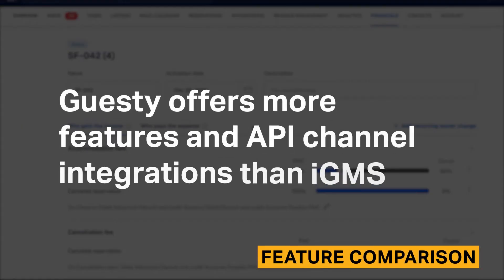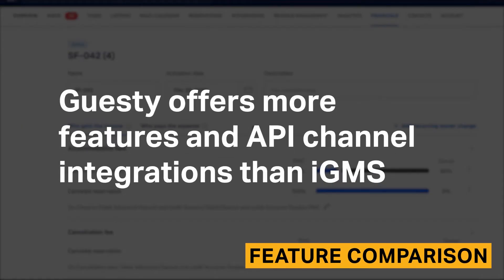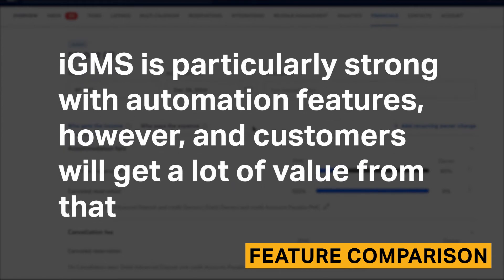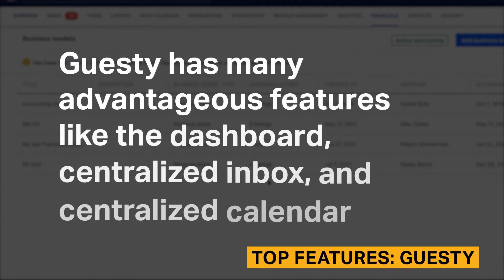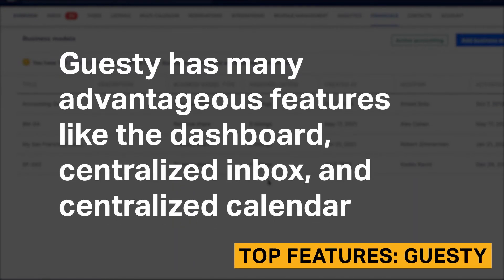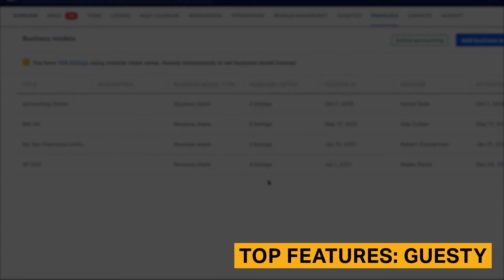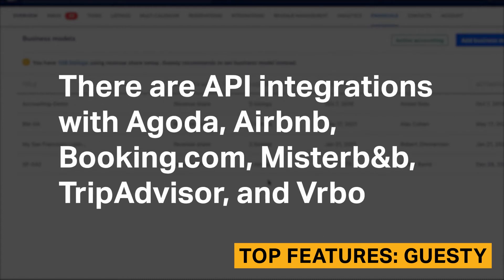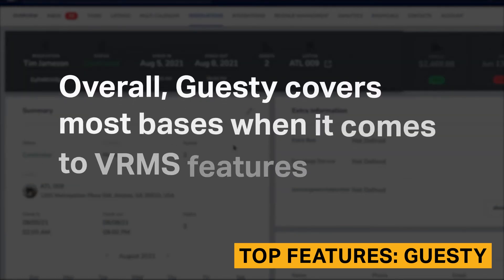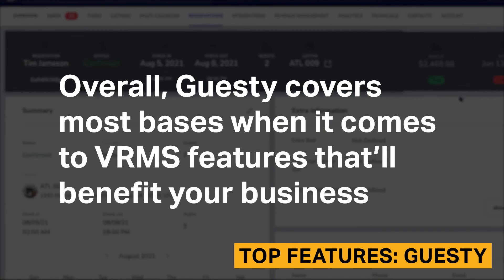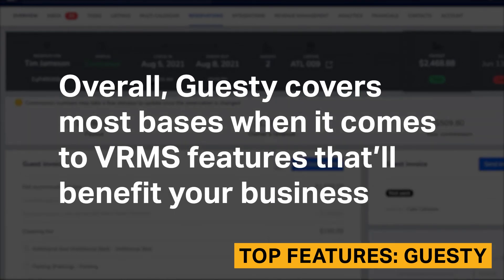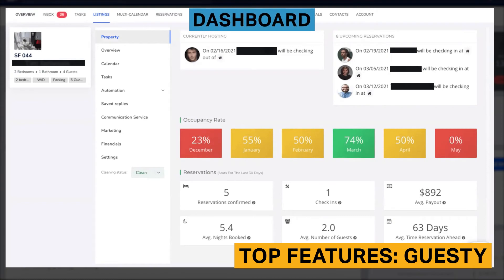Guesty offers more features and API channel integrations than IGMS. IGMS is particularly strong with automation features, however, and customers will get a lot of value from that. Guesty has many advantageous features like the dashboard, centralized inbox, and centralized calendar. There are API integrations with Agoda, Airbnb, Booking.com, Mr. B&B, TripAdvisor, and VRBO. Overall, Guesty covers most spaces when it comes to VRMS features that will benefit your business. A dashboard provides a helpful overview of listing performance, and most VRMS tools don't offer this feature, so it's notable that Guesty offers one.